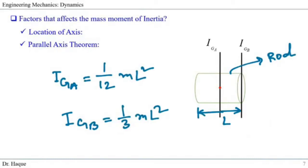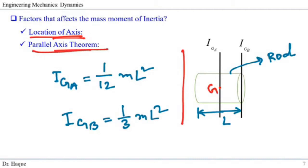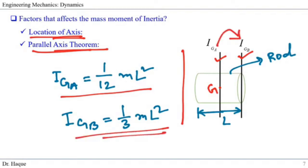The fourth factor is the location of the axis. So far we have talked about axes going through the mass center G. What if we are interested in a rotation axis that does not go through the mass center — perhaps at the end of the body or outside of it? The way to find it is the parallel axis theorem, which we will cover in the next series. For example, for a rod the mass moment of inertia at the mass center is (1/12)mL², but if you move the axis to the end, it changes to (1/3)mL².